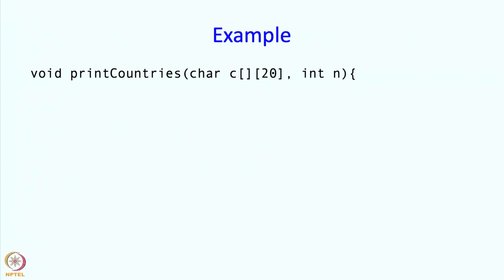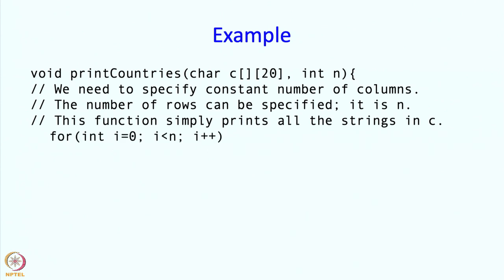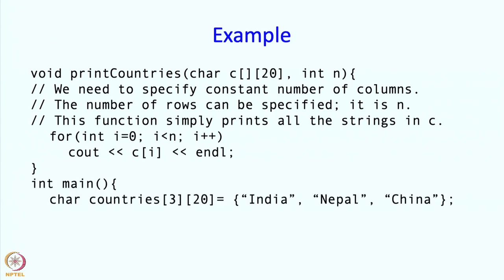To illustrate: the second dimension must be a constant. If you want to pass an array with a different column length, this function will not work. Here we have a function that takes an array with a fixed number of columns and an argument n specifying how many rows, then simply prints all the strings. In main, our countries array with 3 strings is passed, and all 3 names get printed.